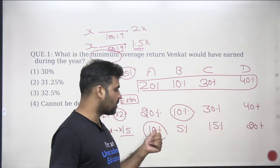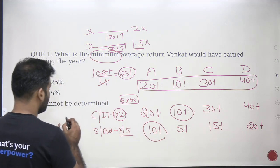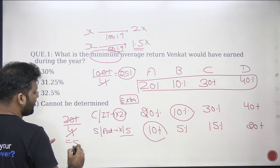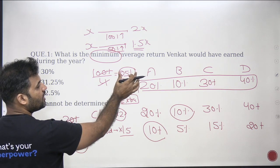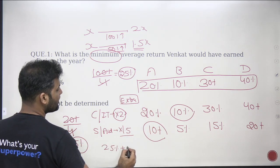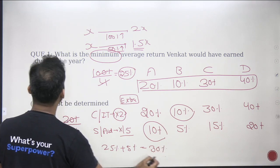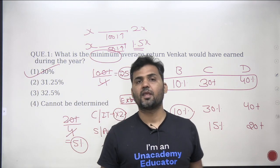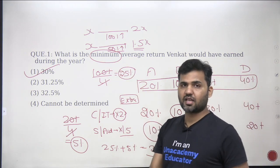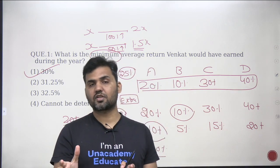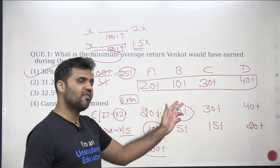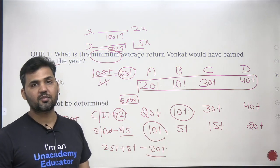The minimum return is possible when you pick 10% extra from the 2x row and 10% extra from the 1.5x row. The total extra return is 20%, and averaged over four values that gives 5% extra. So the minimum average without any extraordinary performance is 25%, the minimum possible increment is 5%, and therefore the minimum average return Venket would earn is 30%. Option 1 is the answer. No need to make any equation. Average is sum divided by number of values — to minimize the average, you minimize the sum by picking the two smallest compatible values.